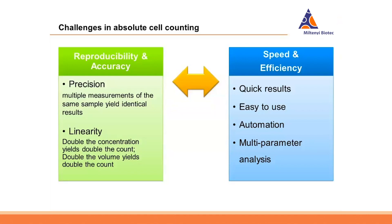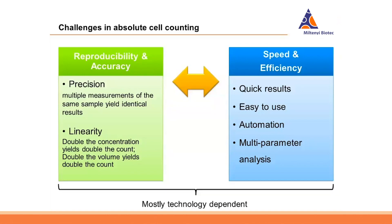Besides the primary goals, many operators using automation are interested in speed and efficiency. These are not primary properties of the counting method itself; it's more about everything built around it. As we are bringing MaxQuant flow cytometry devices to the market, we need to talk about what this means in the context of MaxQuant flow cytometry.